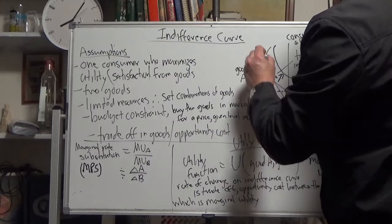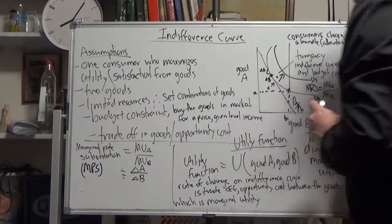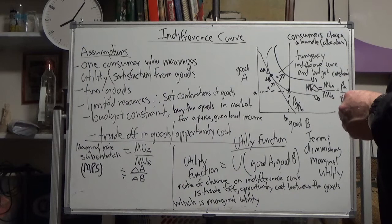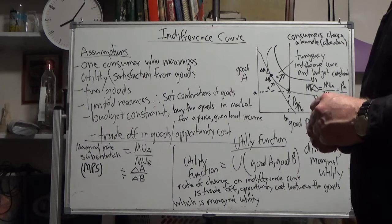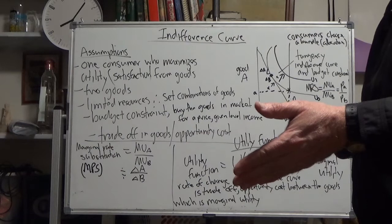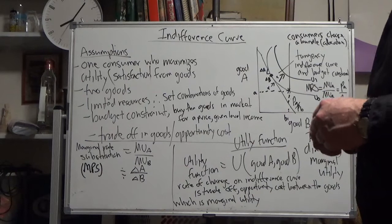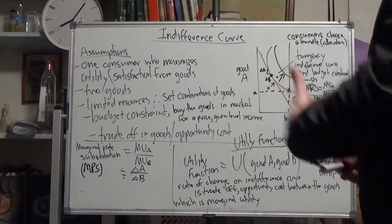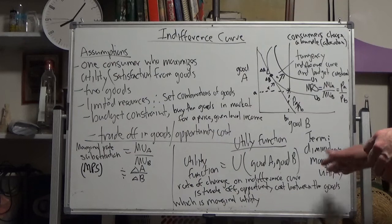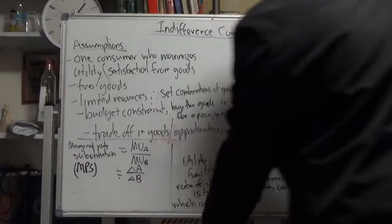An inefficient point would be here because that consumer could get higher utility and go to the indifference curve. But a point here, if they've only got that level of resources, that indifference curve is unattainable, unreachable. Diminishing marginal utility is when, say you go to Hungry Jacks and have three double whopper burgers, that's too much for your stomach and your marginal utility for the second and third hamburger will drop off dramatically. That's the best way I can describe diminishing marginal utility.